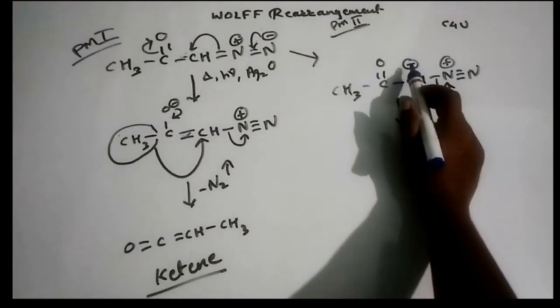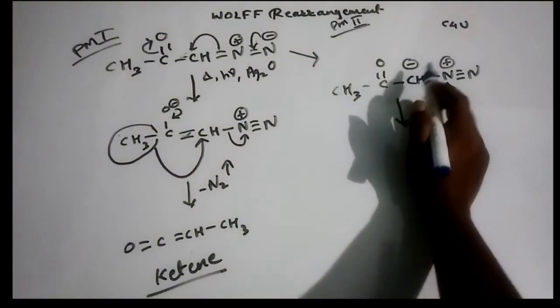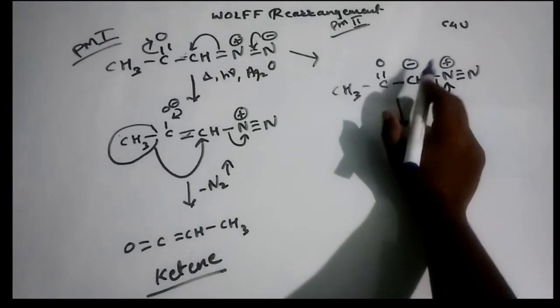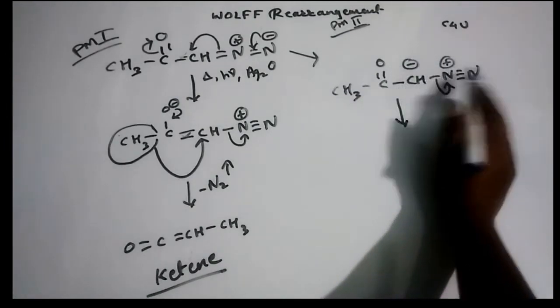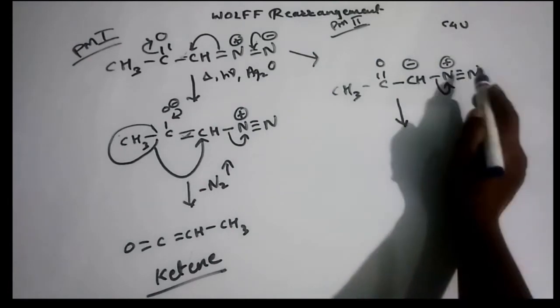And we know when your carbon has an extra electron pair, and in the same condition extra electron pair means when your carbon has a negative charge, unpaired electrons, and in the same condition one of the leaving groups leaves out.